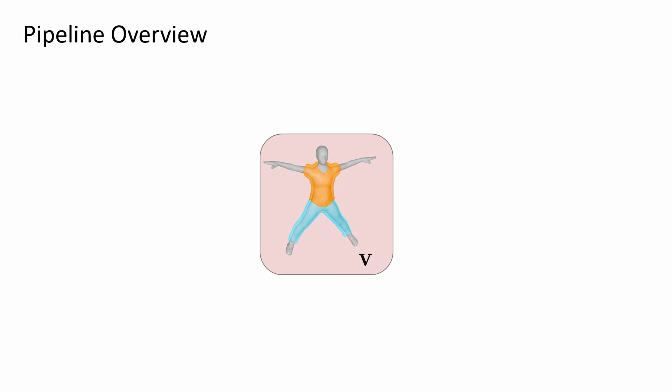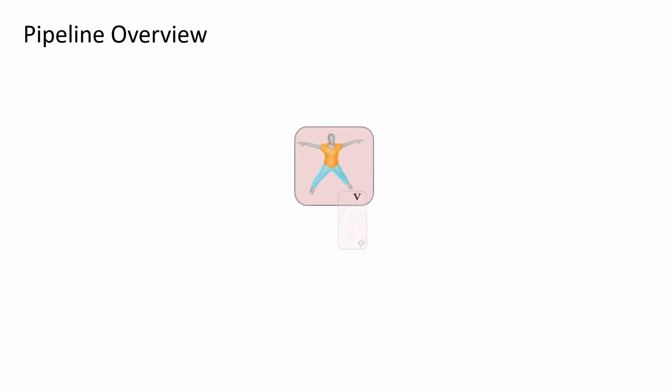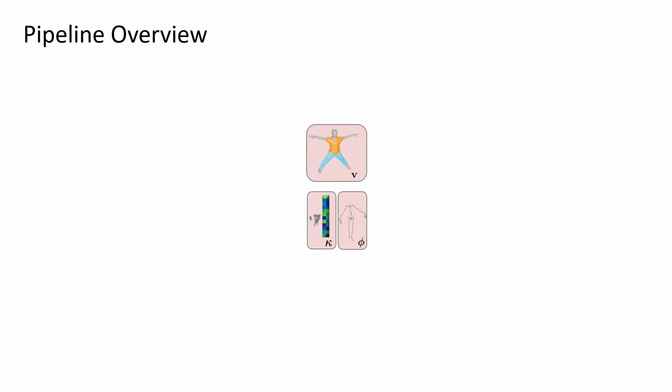Our method uses forward mapping. Thus, we start from the canonical space V. We additionally take the motion vector phi, phase embedding kappa — which is regressed from 3D keypoints — the autodecoded color feature vector H, and the view direction D.